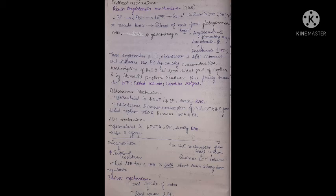Aldosterone mechanism: stimulated by decreased extracellular fluid and decreased BP during renin-angiotensin activation. Aldosterone increases reabsorption of sodium chloride and water from the distal nephron, increasing extracellular fluid and blood pressure. Antidiuretic hormone (ADH) mechanism: stimulated by decreased ECF or decreased BP. It has two effects — vasoconstriction increasing peripheral resistance, and increased water reabsorption from distal nephron, restoring ECF volume. ADH plays a role in both short-term and long-term BP regulation. Thirst mechanism increases oral water intake, increasing blood volume and pressure.